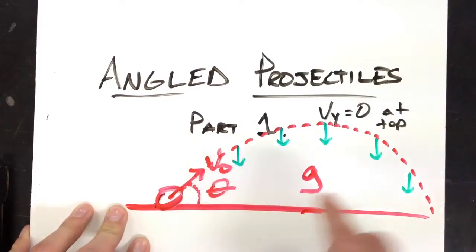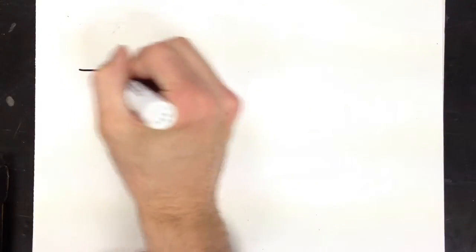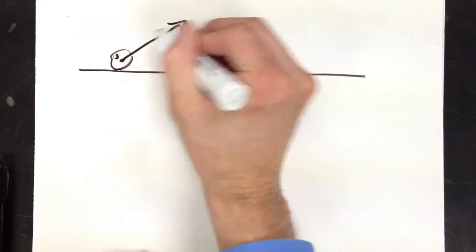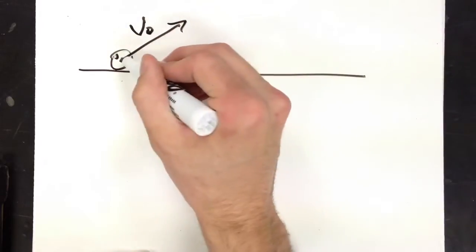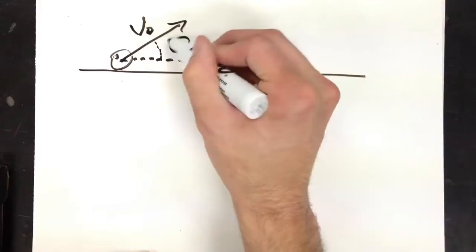So let's look at how to go about attacking this type of problem. Again, let's draw our projectile, fired with some v0 at some angle relative to the horizontal theta.